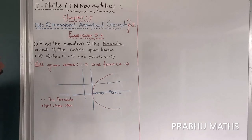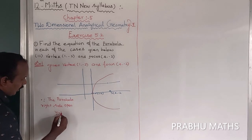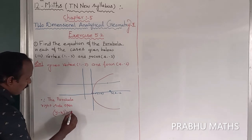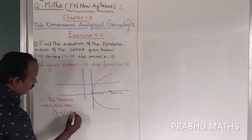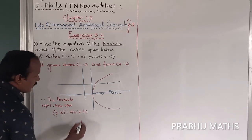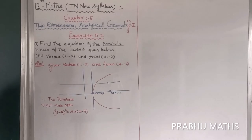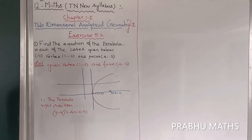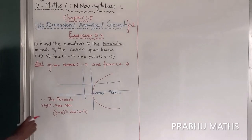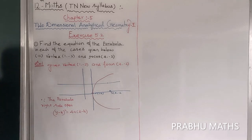So a right-side open parabola: the general form is (y - k) whole square is equal to 4a into (x - h).